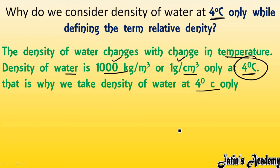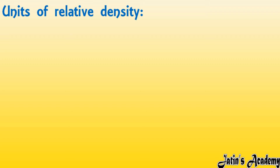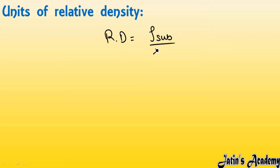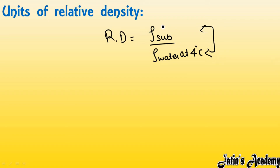Next, let's look at the units of relative density. The formula is: relative density equals density of substance divided by density of water at 4 degrees Celsius. In both the numerator and denominator, we have density — the same quantity. When we take the ratio of the same quantities, they cancel each other out. Therefore, relative density has no units — it is a dimensionless, unitless quantity.